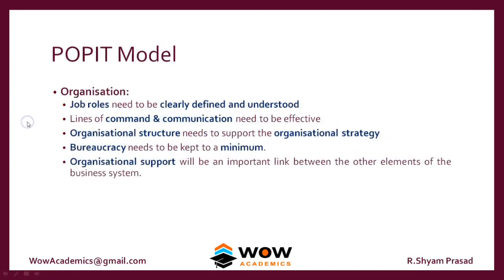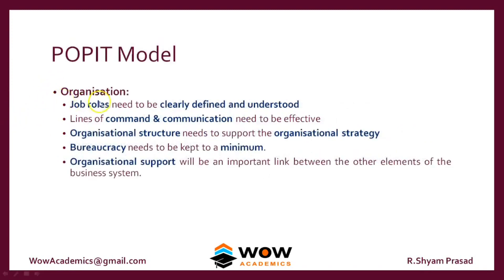Next we move on to the O, which refers to the organization. As we are sending 20 people to the online ordering division, these 20 people should have a clear job role. They should know to whom to listen, whom to report, whom to communicate. There should be an organizational structure out of these 20 people — who is going to be the supervisor and who are going to be the workers. As it is a new system, the bureaucracy or rules-following should be kept to a minimum, and there should be constant organizational support and help for these people.